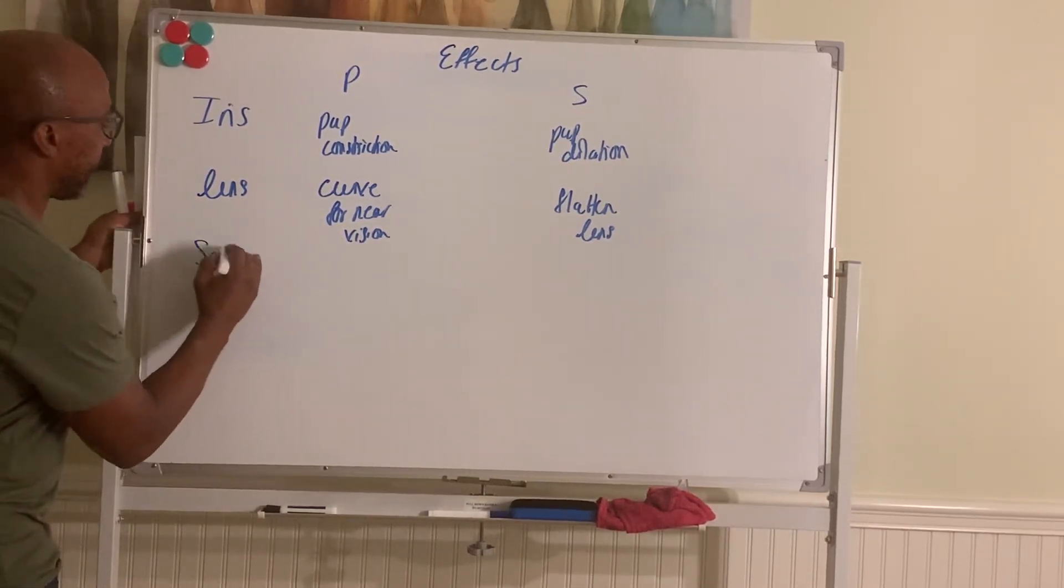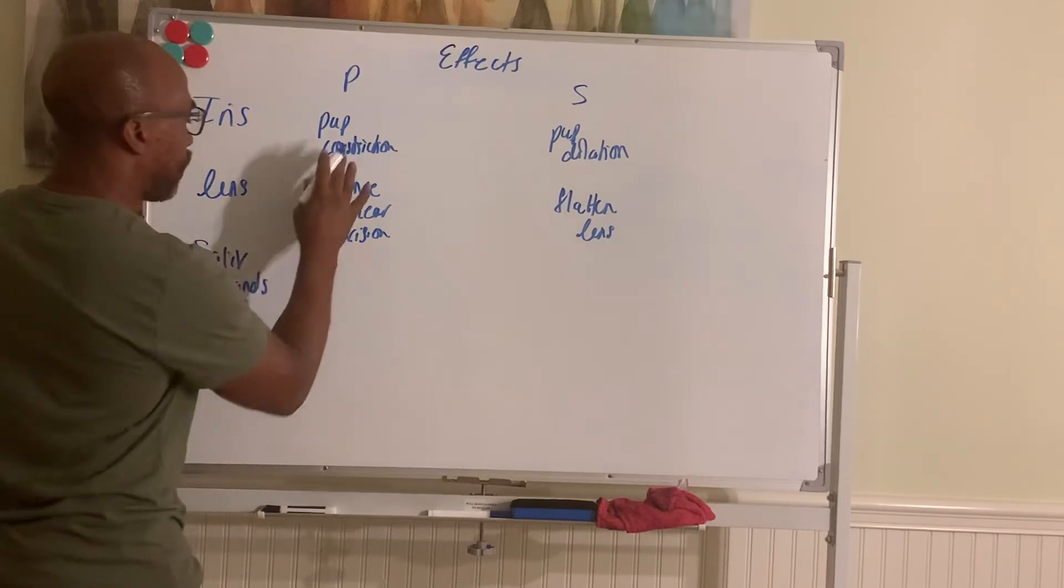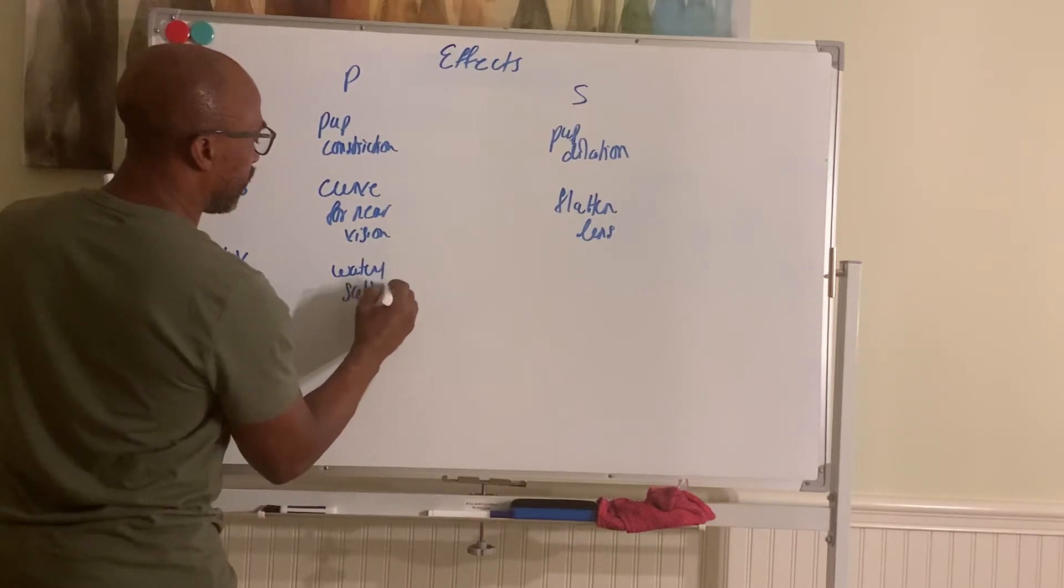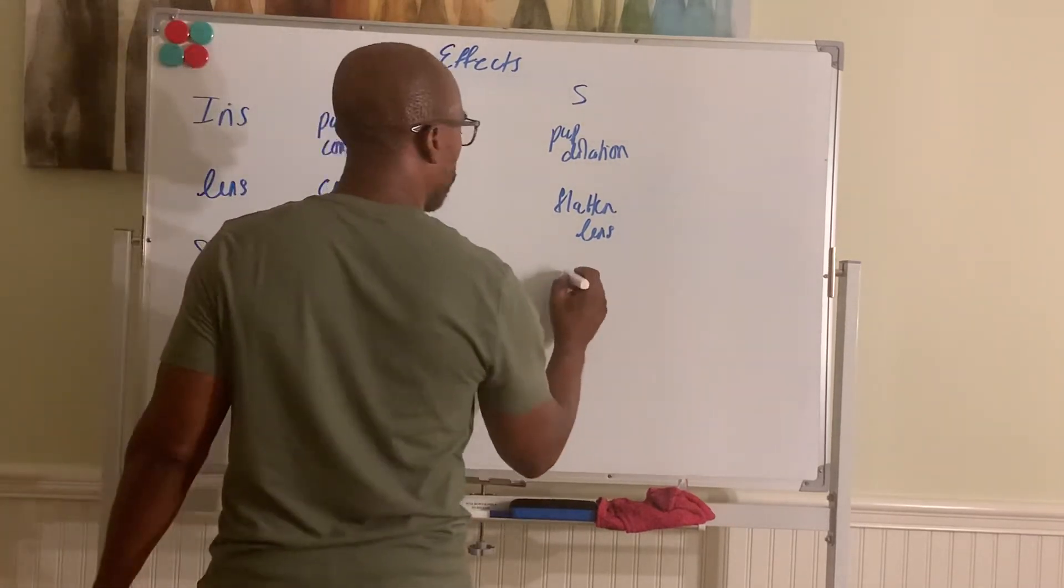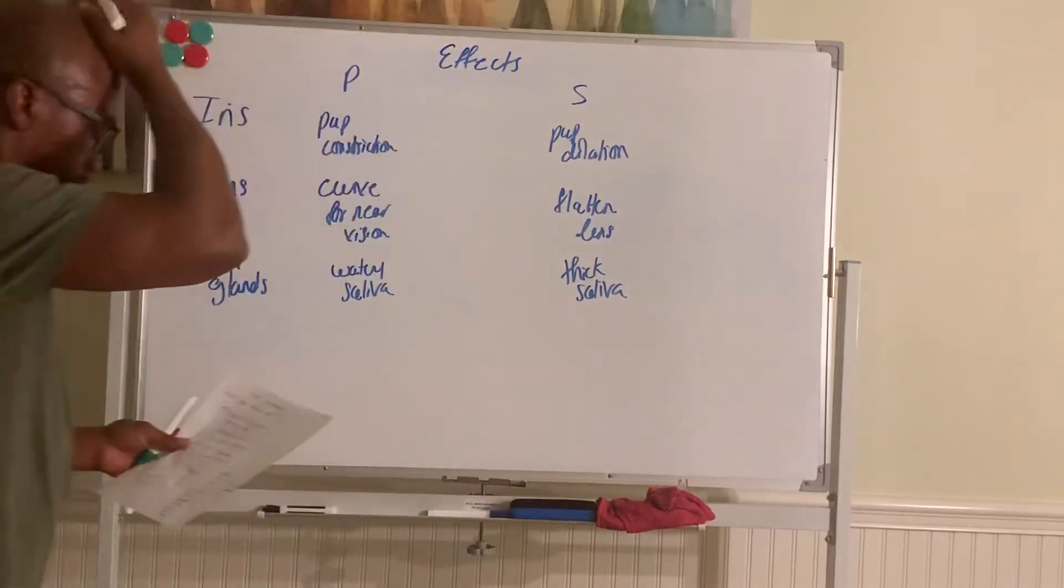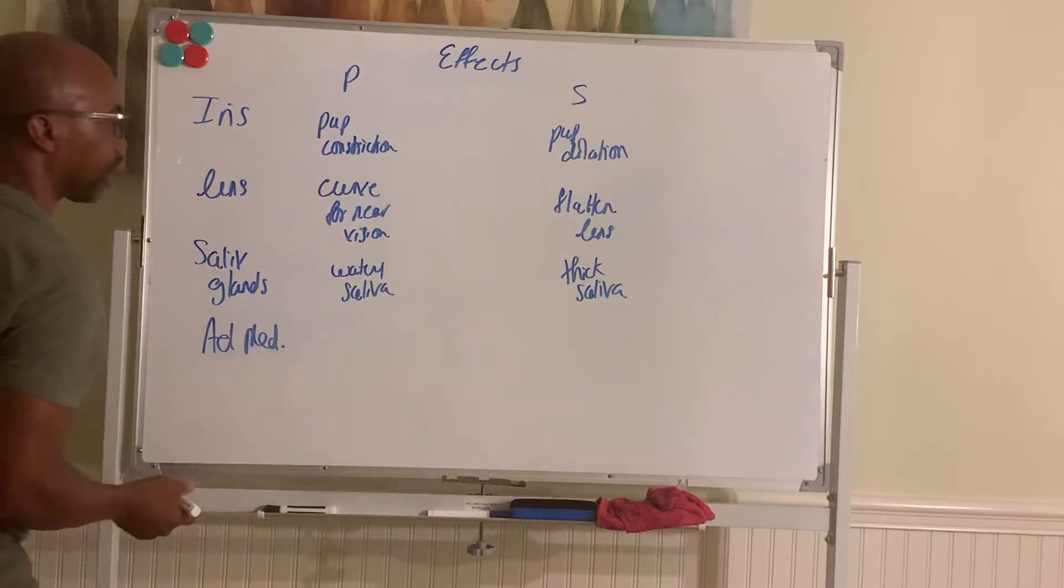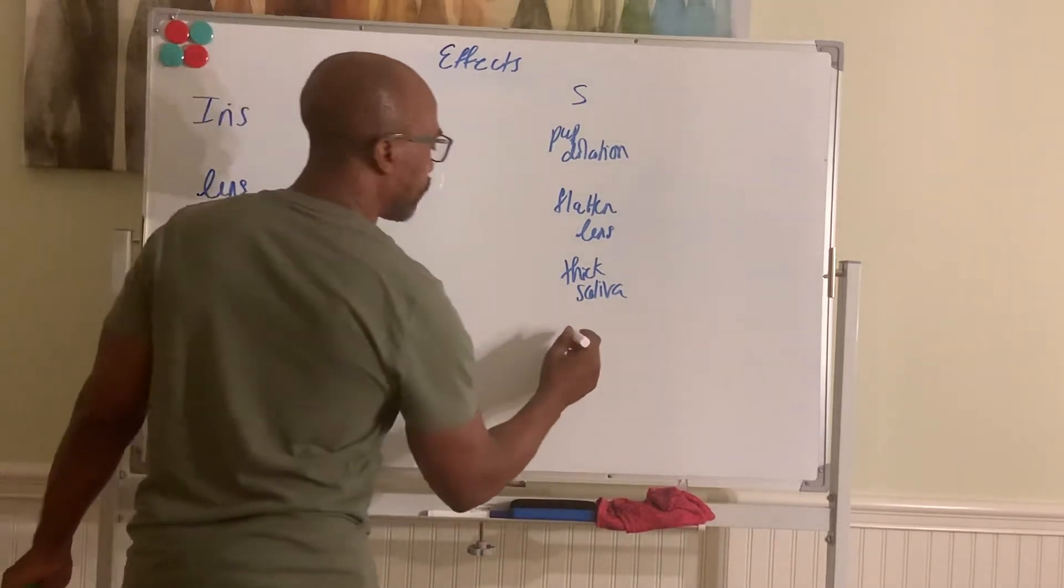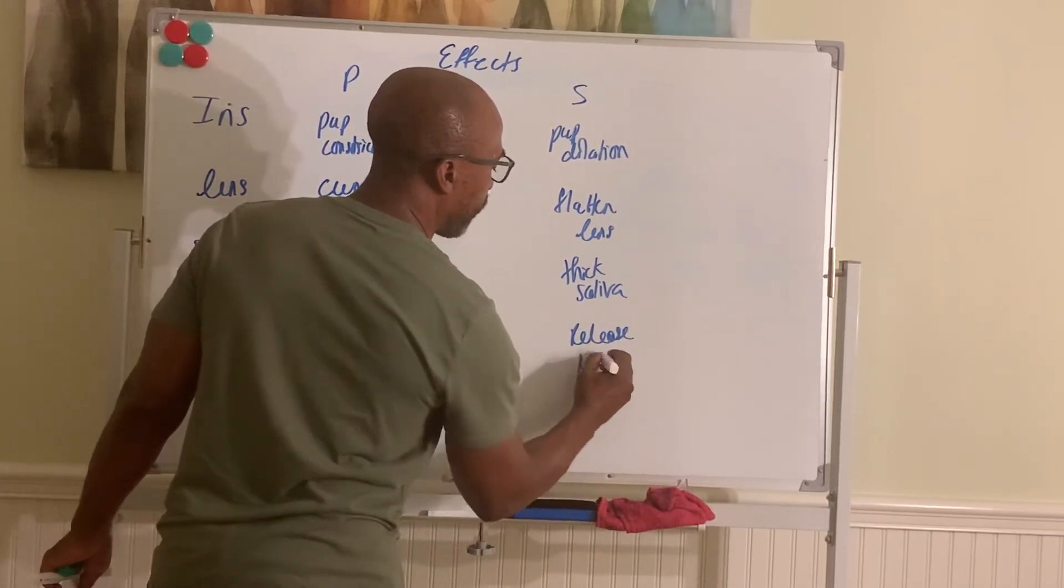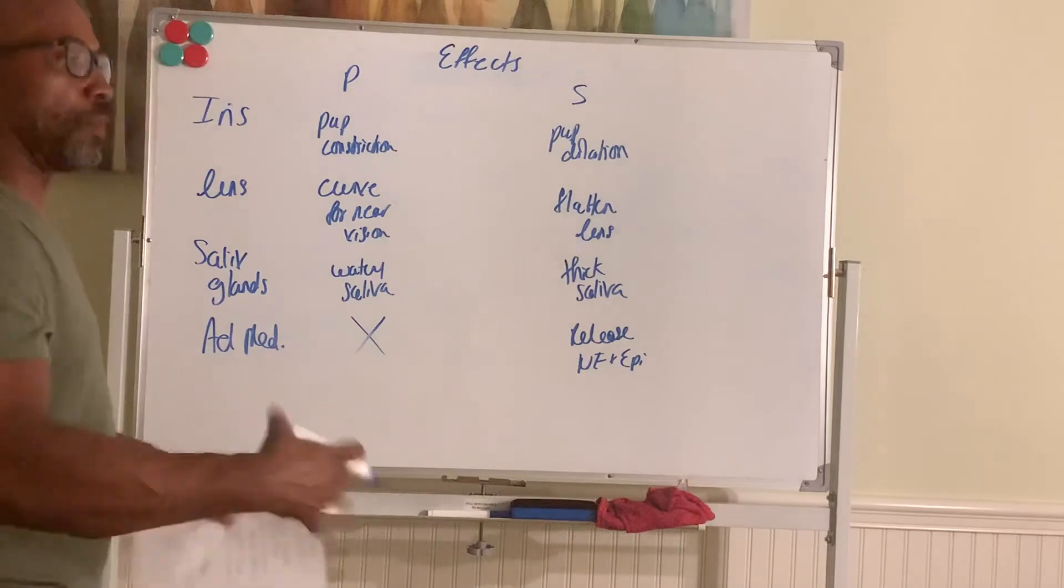The salivary glands are activated. The para makes your saliva very watery. So you get a watery saliva from para. Simpa, you have less water. So you have thick saliva. Your adrenal medulla here, there's no para in that one. And simpa triggers it to release norepinephrine and epinephrine. Your adrenaline to flood the blood to pump you up.